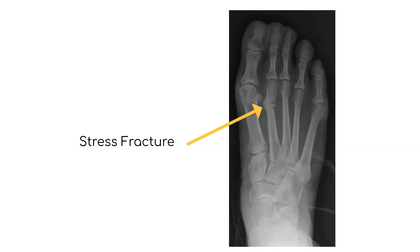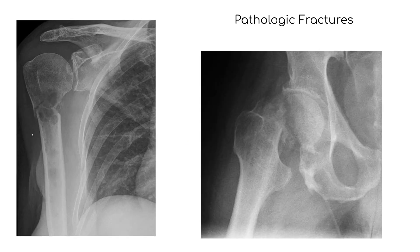Stress fractures occur from overuse and repetitive trauma. Pathologic fractures are due to a pathologic process, such as hypercalcemia, osteoporosis, cancer, or tumors. For example, in hypercalcemia, calcium is taken from the bone causing osteopenia, or bone loss.